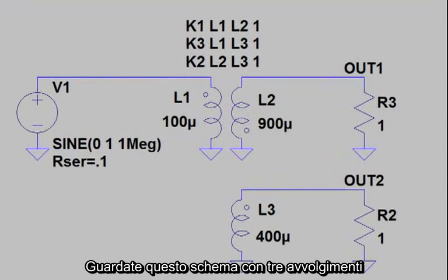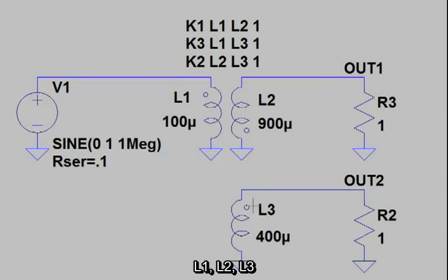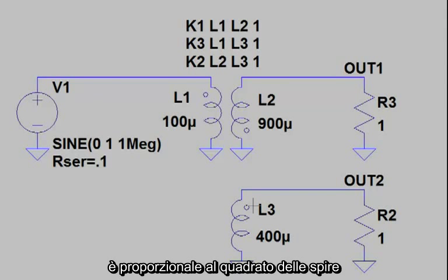Consider this schematic with three windings, L1, L2, L3, where the inductance ratios shown are proportional to the square of the turns ratio.